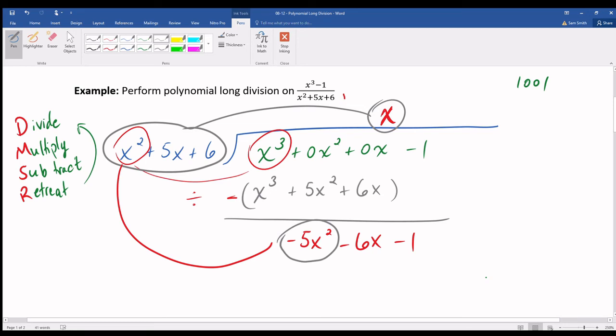So this time I'm going to divide x squared into the new leading term negative 5x squared. And the result of that is going to be negative 5, which I'll put in the constants column. Multiply. So now I'm going to go and multiply the minus 5 that I just found by the divisor. Negative 5 times x squared, negative 5 times 5x, negative 5 times 6.